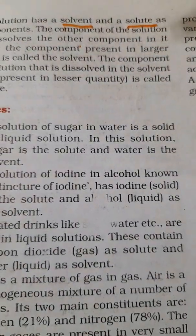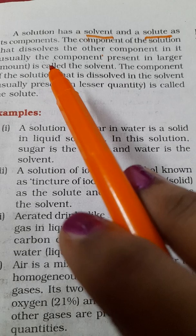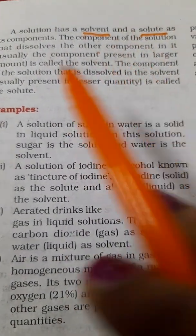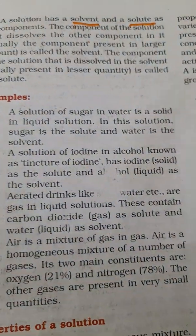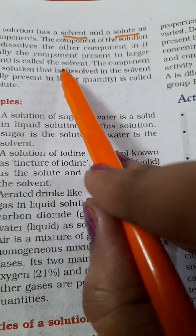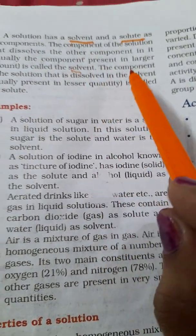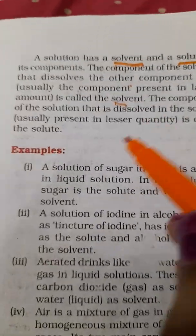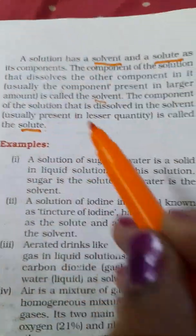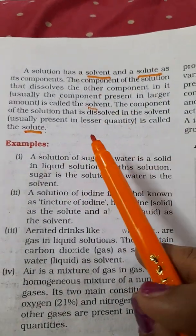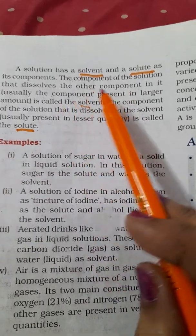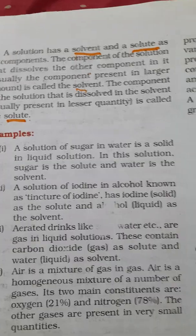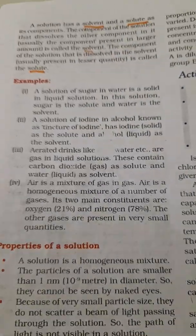The component of the solution that dissolves the other component in it, that is in larger amount, is called the solvent. Here in this case for sugar water, water is present in larger amount, so we call that as a solvent. The component of the solution which is dissolved in the solvent, present in lesser quantity, is called the solute.